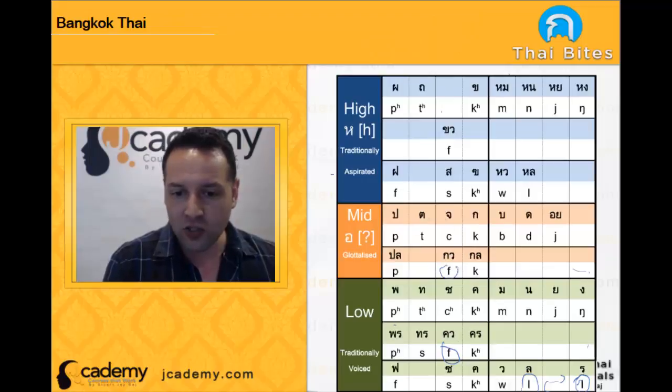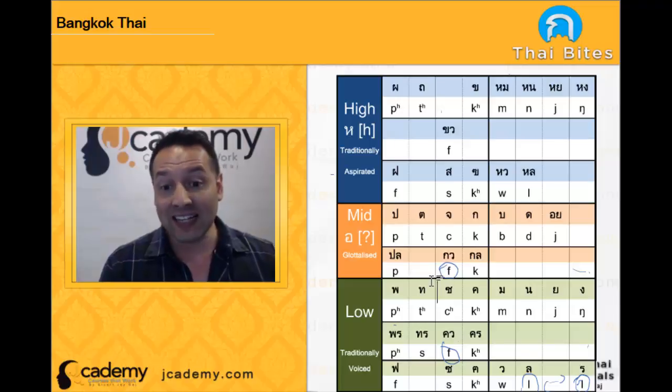But if we come down to Bangkok Thai, what happens? This go-wa is also a pho. So, maikwa becomes maikwa. Now, in southern Thai dialect, you might get this kwai to a pho. And this happens all over the place.